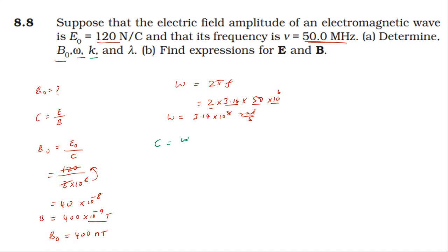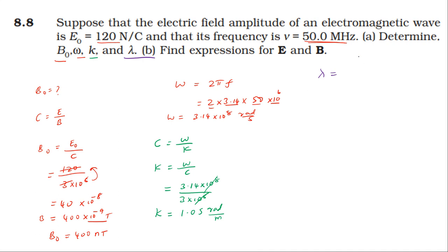Now find wave number k. Speed of light c = ω/k, so k = ω/c = 3.14×10⁸ divided by 3×10⁸. The 10⁸ terms cancel, giving k = 3.14/3 ≈ 1.05 radians per meter. Then wavelength λ = 2π/k = 2×3.14/1.05 ≈ 6 meters.